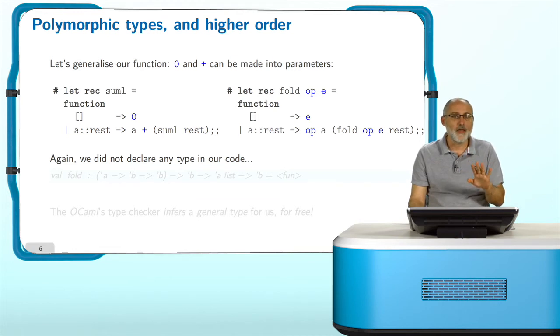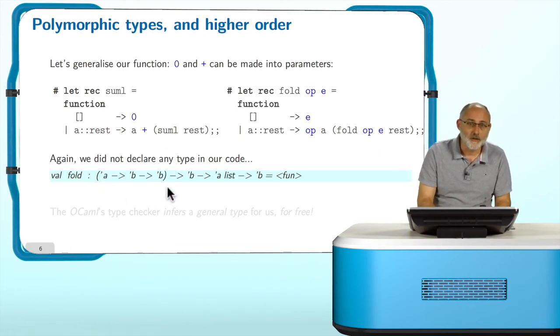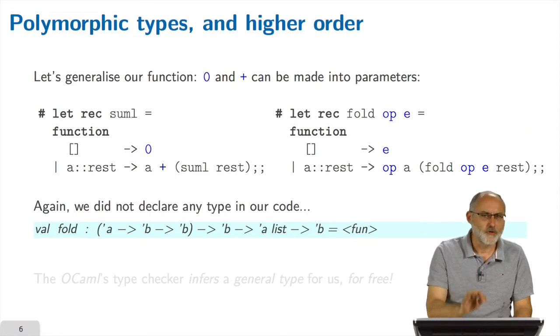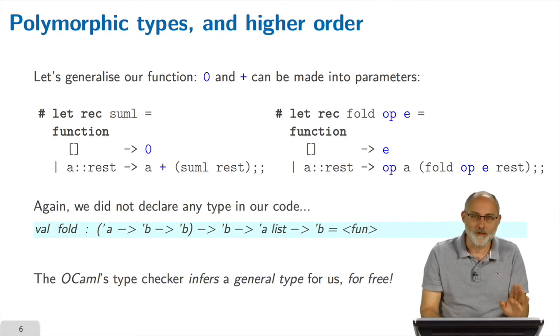Again, here we did not declare any type in our code. We didn't say what is the type of fold, didn't say what is the type of op, didn't say what is the type of e. And yet the compiler reads the program, accepts it and tells us, thanks a lot, you defined the fold function. And look, I believe that what you have given me, actually I don't believe, I'm sure, what you have given me is a function that takes a parameter op, that takes an argument of type a, another argument of type b, and gives a result of the same type b, then expects an argument of type b, our e here, then takes a list of elements of type a, I mean this list here, and gives back a result which is again of type b, which is the type of this e, for example. I'm not sure you are really convinced that this is the right type, this will become clearer over the course, but what is important is that this is actually the most general type one can give to this function, and the OCaml type checker just inferred it for us, the most general type for free, we had nothing to do to get it.